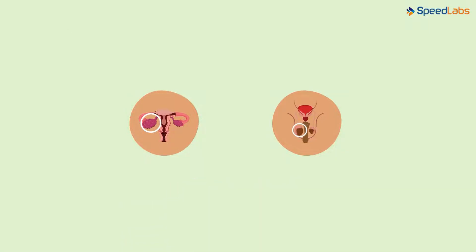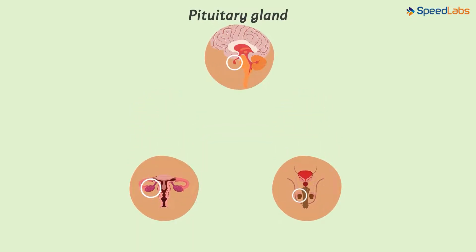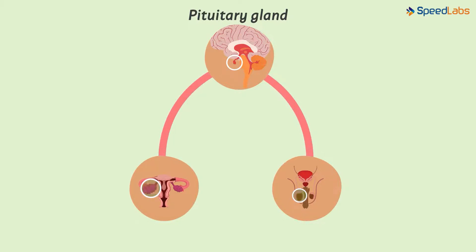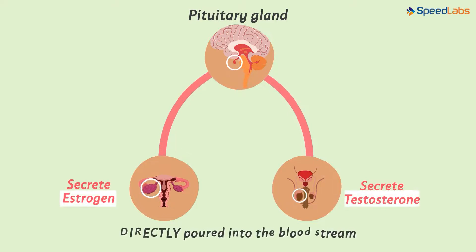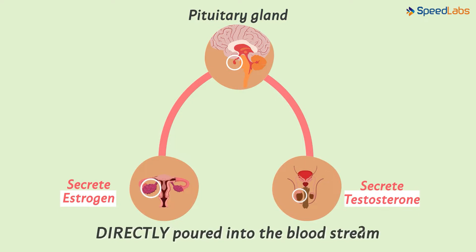Who is the master of all glands in the body? We know it is the pituitary gland. In order to make the other glands work, it has to release signals, and these signals are also in the form of chemicals. Now once the glands — in this case the testes and ovaries — receive the signals from the pituitary, they get stimulated. That's correct! It makes the testes secrete testosterone and the ovaries secrete estrogen. Now these sex hormones are directly poured into the bloodstream — of course, because these two are endocrine glands.